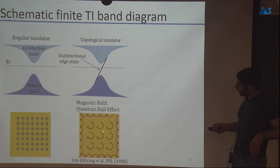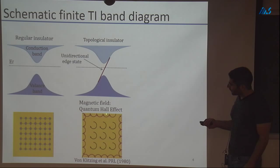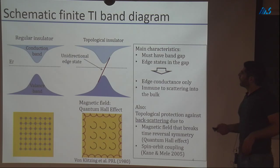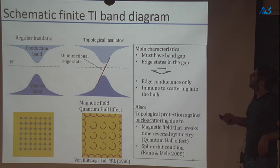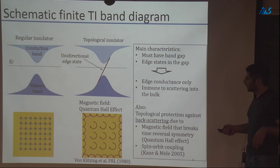You can also understand the unidirectionality: in an electronic system with a magnetic field, every point within the bulk gets zero contribution from surrounding charges, but only on the edge you get a unidirectional contribution. So the main features are: the material needs to be gapped, and once we truncate the system, we get edge states in the gap. The edge conductance is immune to scattering into the bulk, it's unidirectional, and it was manifested in electronic systems using magnetic field or spin-orbit coupling.